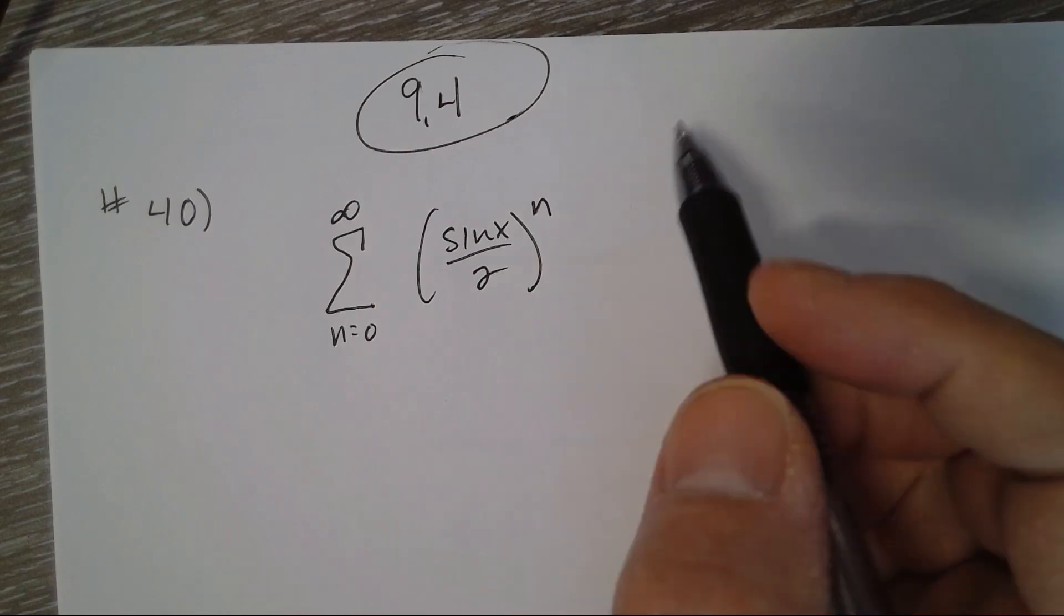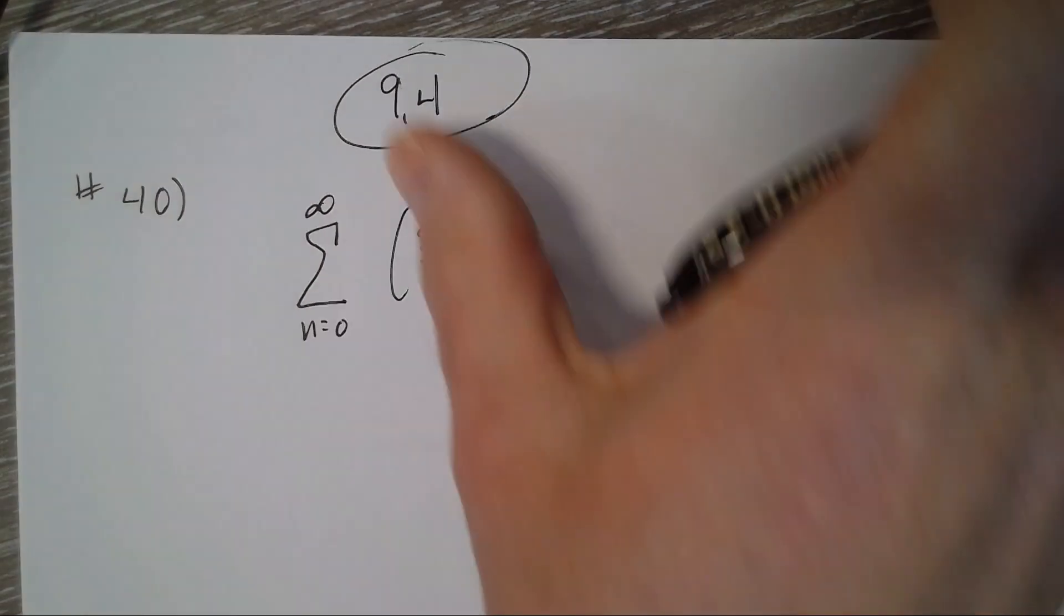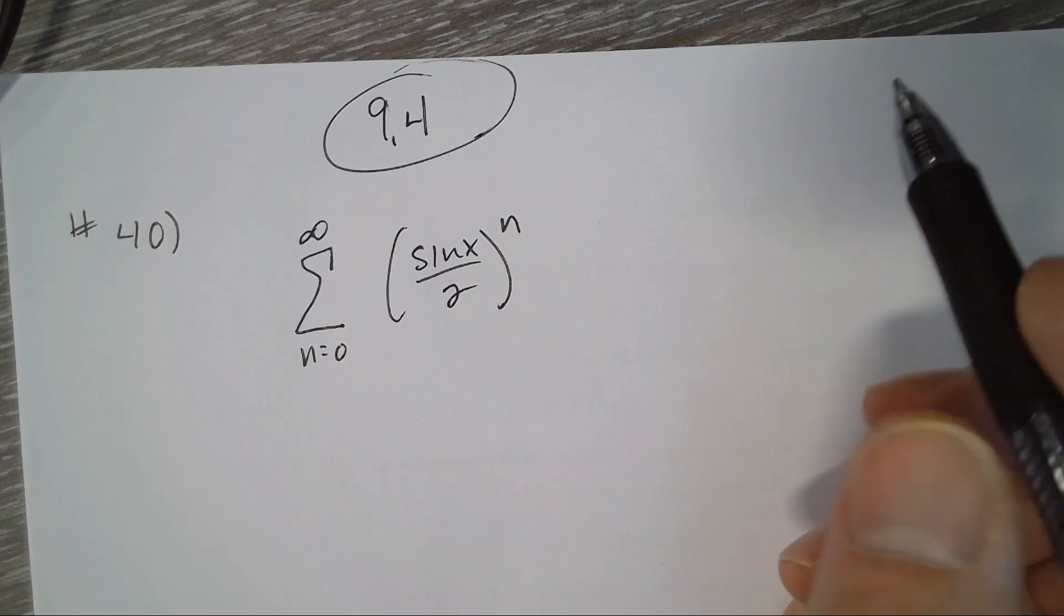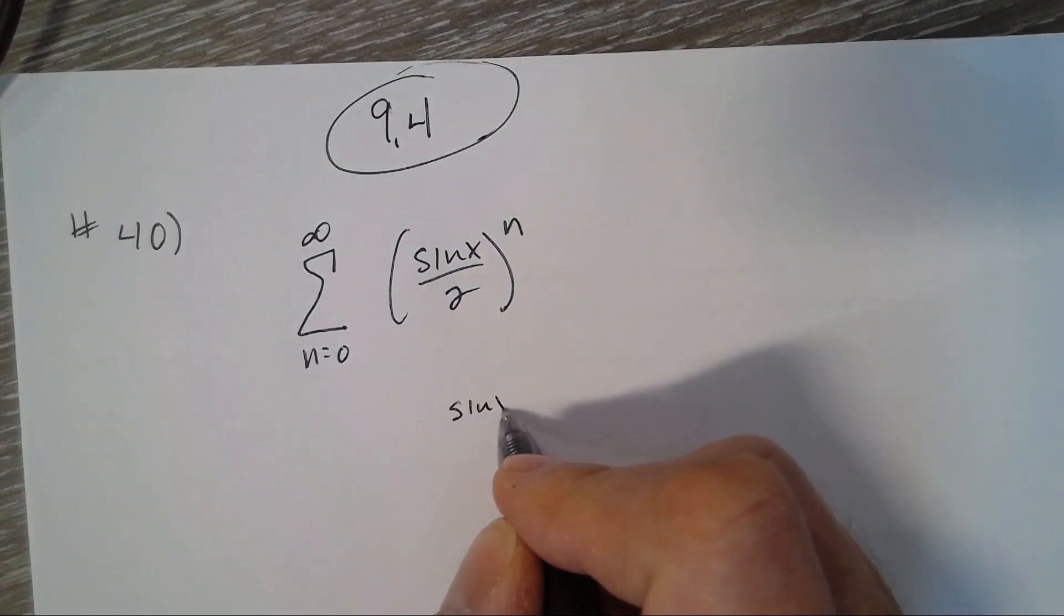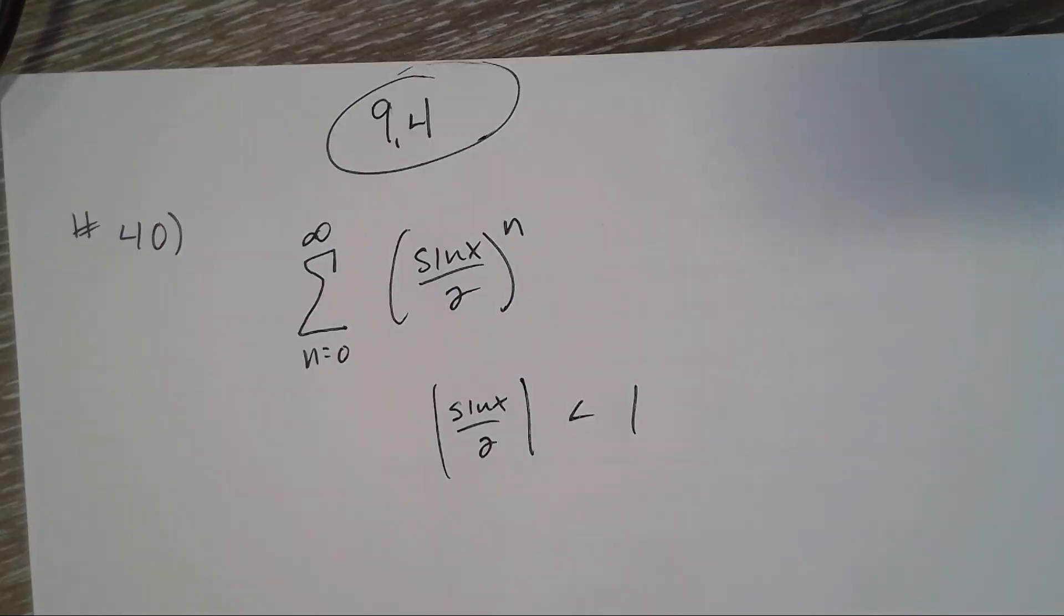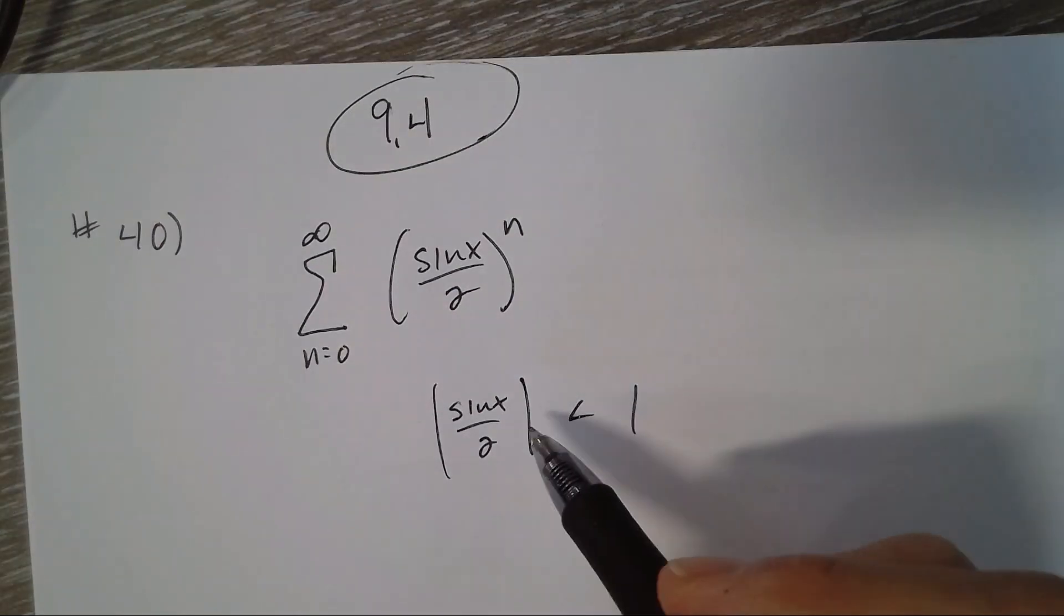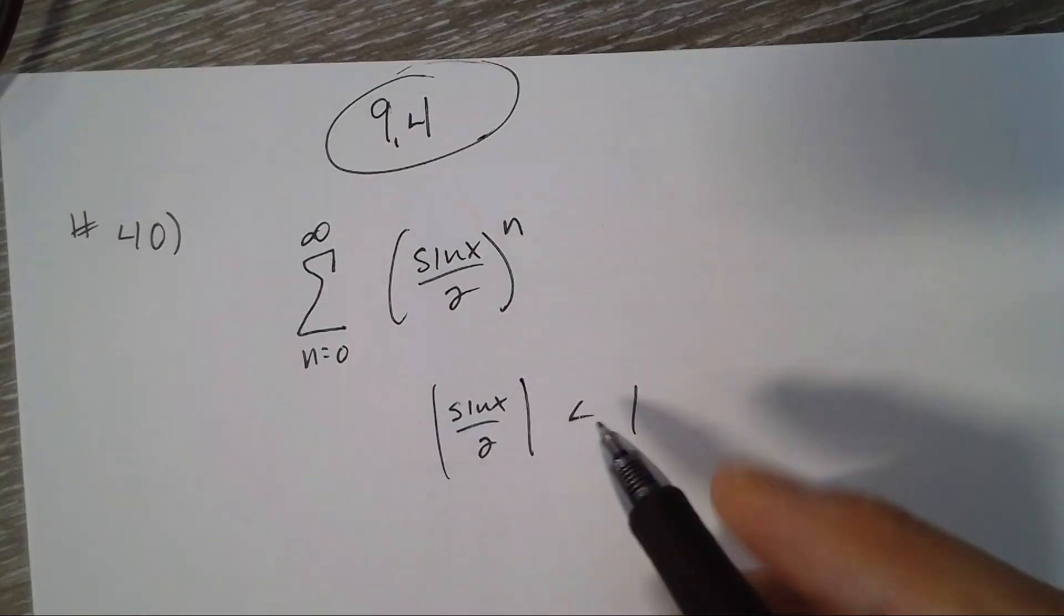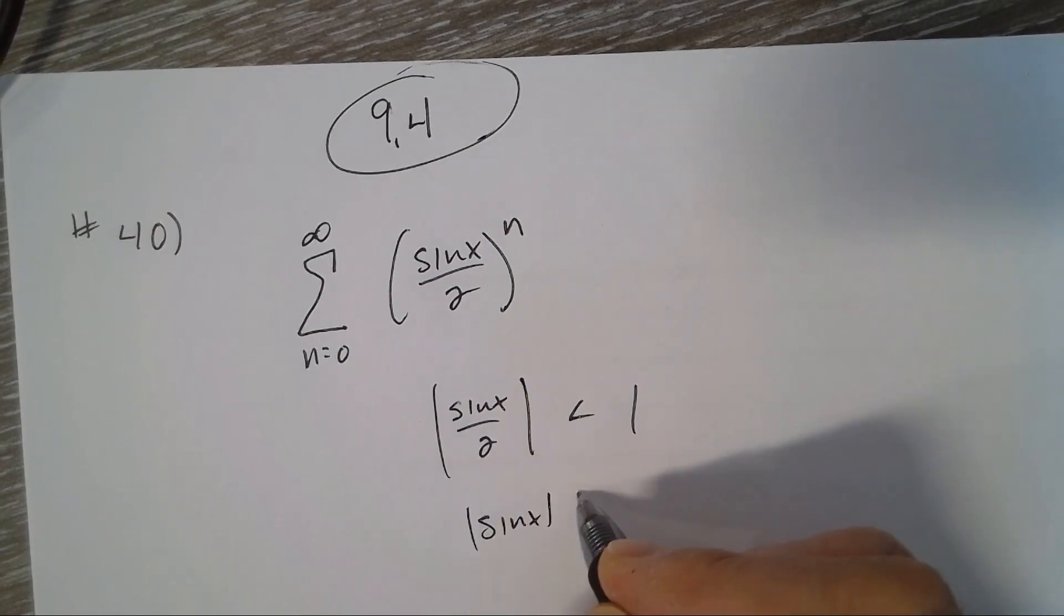So whatever is being taken to the nth power, which is this quantity right there, the absolute value of it has to be less than 1. In order for it to converge, I can multiply both sides by 2. So it's absolute value of sin x less than 2.